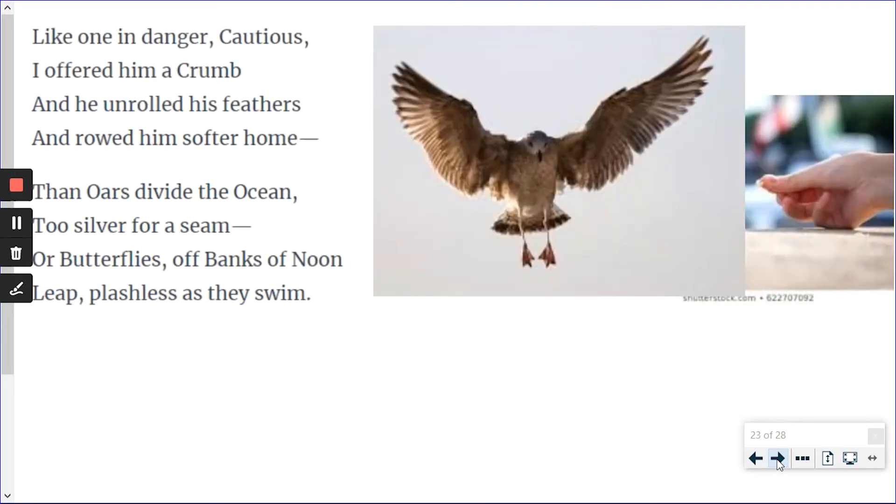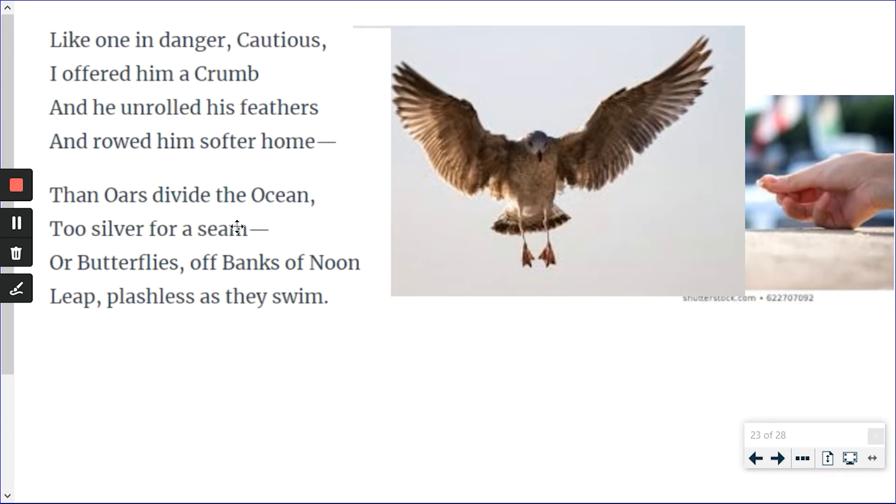And the last part. One in danger, cautious, I offered him a crumb. He unrolled his feathers and rode him softly home. Now, this is very easy. Here's a little crumb of bread that the poet is trying to give to the bird. But have you ever tried to feed a bird from your hand? All they do is unfurl their wings, which means spread their wings and fly.